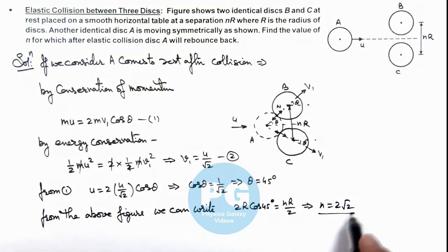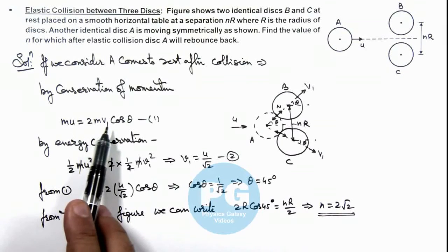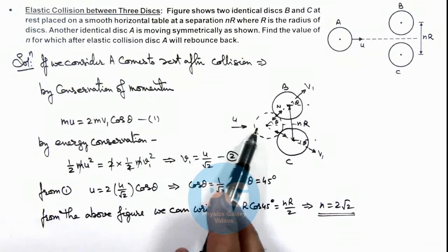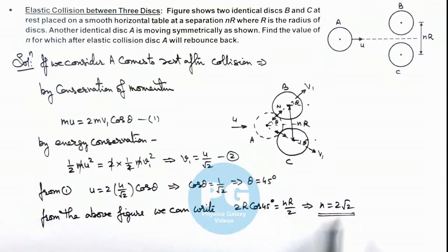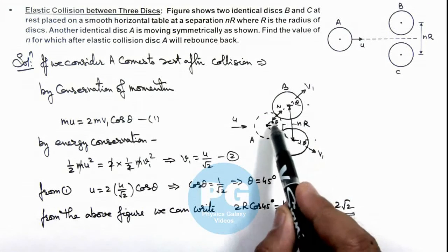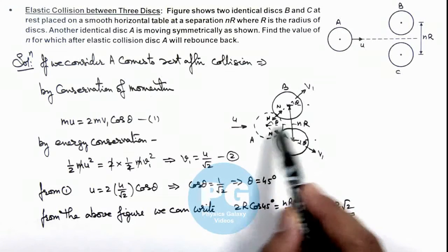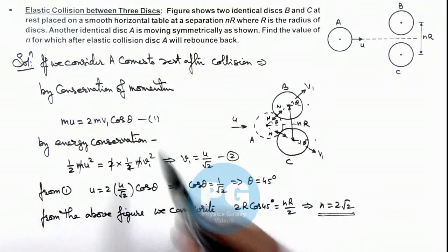So if n is equal to 2 root 2, it implies after collision A will come to rest, which is the point from where we started. So if we consider A to be at rest after collision, the value of n we are getting is 2 root 2. If the value of n is less than 2 root 2, the value of theta will be less and the impulse imparted on the ball A will be more and it will rebound.